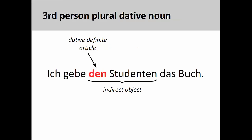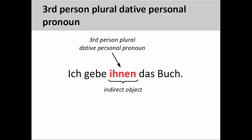The same thing holds with third-person plural nouns. As you see in the sentence ich gebe den Studenten das Buch — I give the book to the students — the noun phrase den Studenten would be replaced by the third-person plural dative personal pronoun ihnen. Note here that the first letter in ihnen is not capitalized.